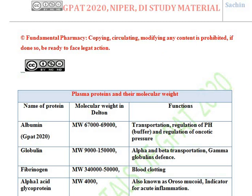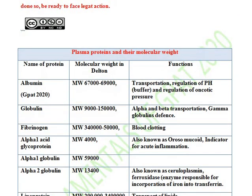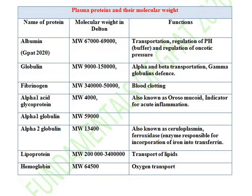Next point is different types of plasma proteins and their molecular weight and functions. You should know the different types of plasma proteins, their functions, and molecular weight — questions have been asked from this topic. First one is albumin, which has a molecular weight of 67,000 to 69,000 daltons.